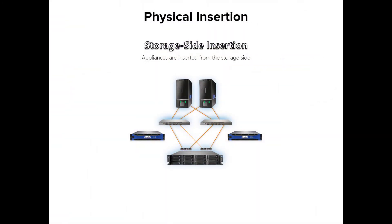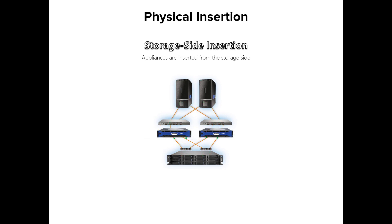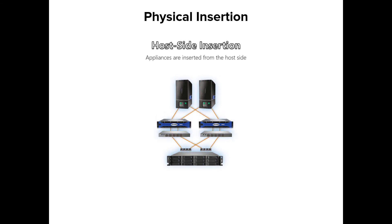In this example of storage side physical insertion, the appliances will be inserted from the storage side. The cable from one storage port is unplugged from the switch, then it's plugged into the downstream nexus port of the CDS appliance. Data I/O is paused for that one path. The switch port is then connected to the upstream nexus port of the CDS appliance, and data I/O automatically resumes for that path through the CDS appliance nexus. The second link is inserted to another nexus adding the second path. The first appliance is now completely inserted into the data path. The second appliance is inserted in the same manner so that all data paths can be intercepted. The host side insertion uses the same process — CDS appliances are inserted between the clients and the switch.